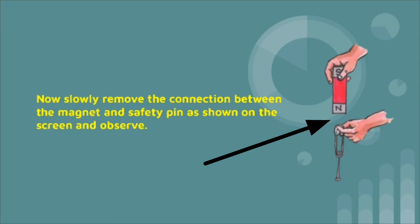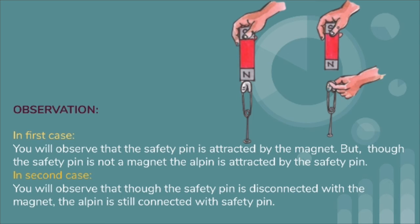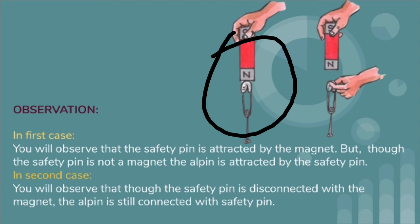Can you see the connection between the bar magnet and the safety pin? The connection is disconnected between the magnet and safety pin. Even though the all pin is still connected with the safety pin. Your observations are: in the first case, you will observe that the safety pin is attracted by the magnet, but though the safety pin is not a magnet, the all pin is attracted by the safety pin.